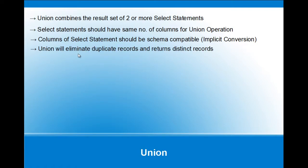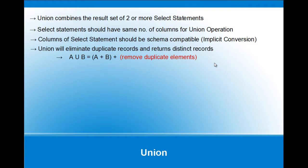UNION will remove duplicate records between the SELECT statements and return only the distinct records. So UNION of A and B is essentially A plus B, but it also removes duplicate elements and gives the distinct records across both tables.